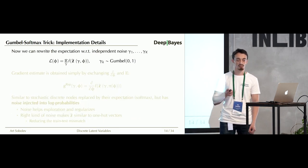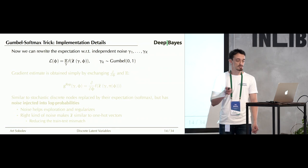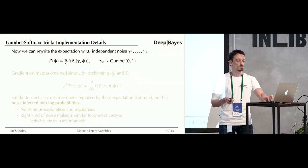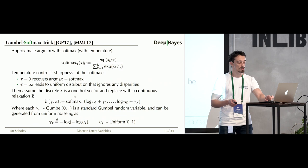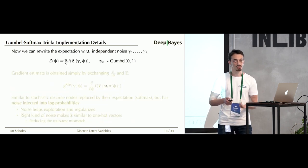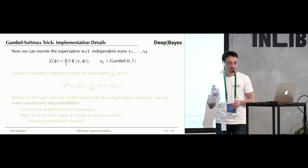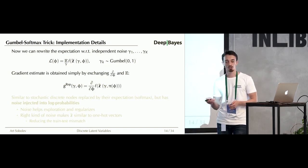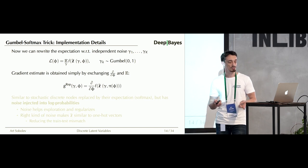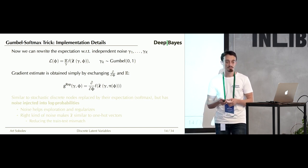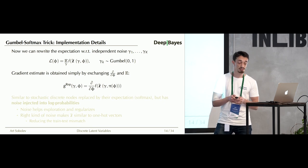We can now express our relaxed objective: sample gammas (the independent Gumbel noises), substitute into the softmax formula, feed this relaxed Z-tilde to f, and obtain the objective. Everything is differentiable all the way down to the parameters phi, so we can use the reparameterization trick-based gradient estimator.